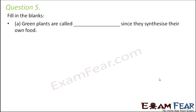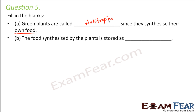Question number 5. Fill in the blanks. Green plants are called blank since they synthesize their own food — self-dependent — autotrophs. The food synthesized by the plants is stored as starch. The food that is prepared is in the form of glucose, but glucose gets converted into starch, which is also a carbohydrate, and it is stored in the form of starch.